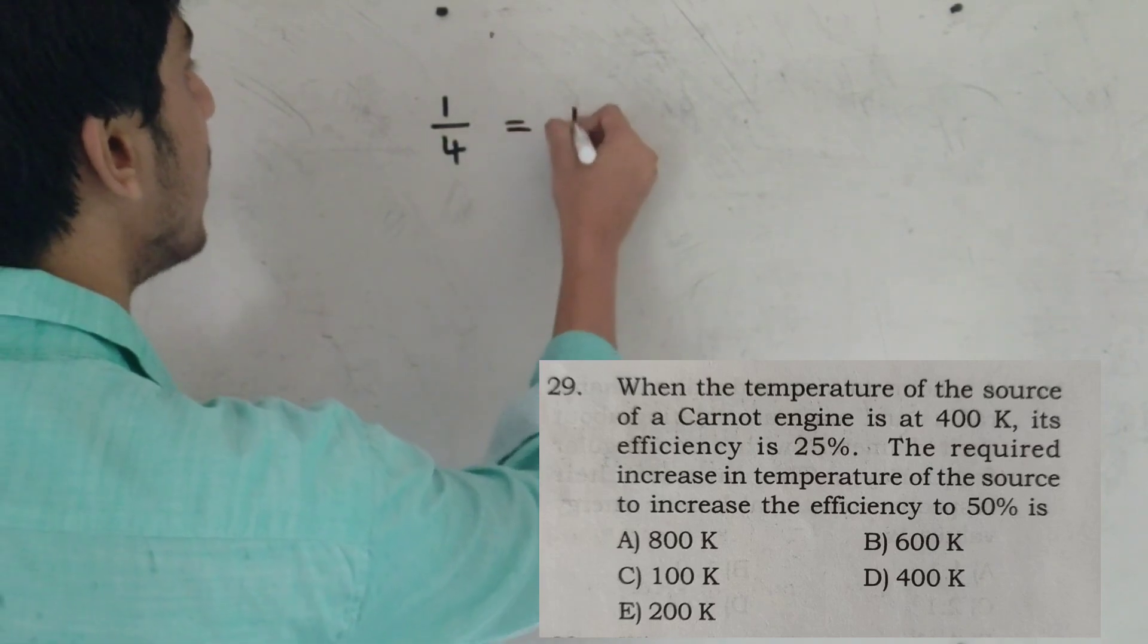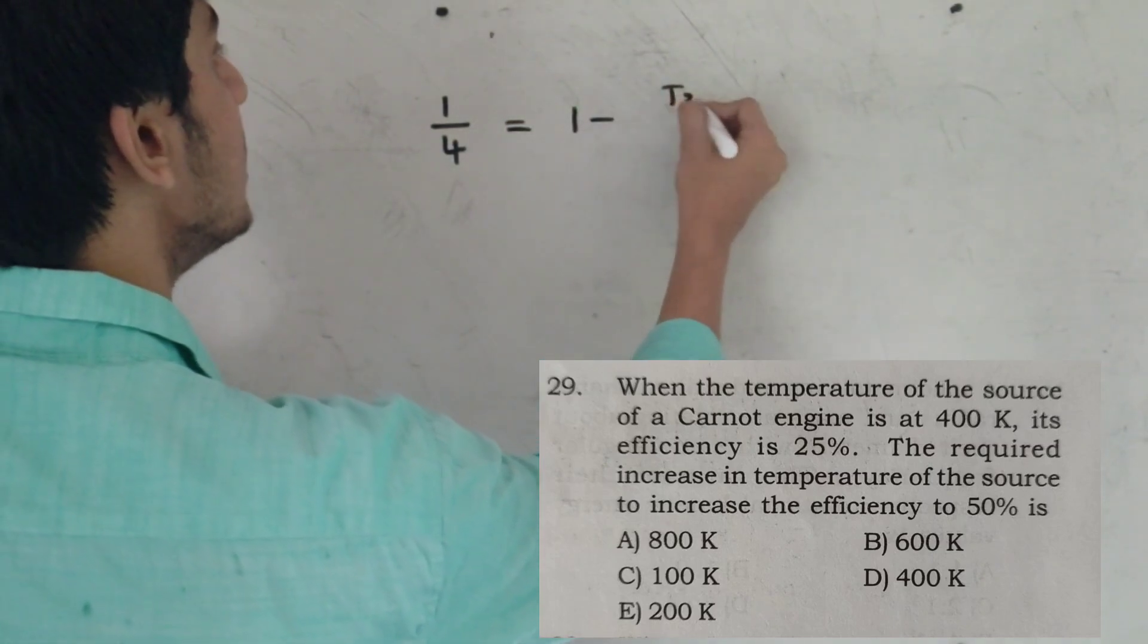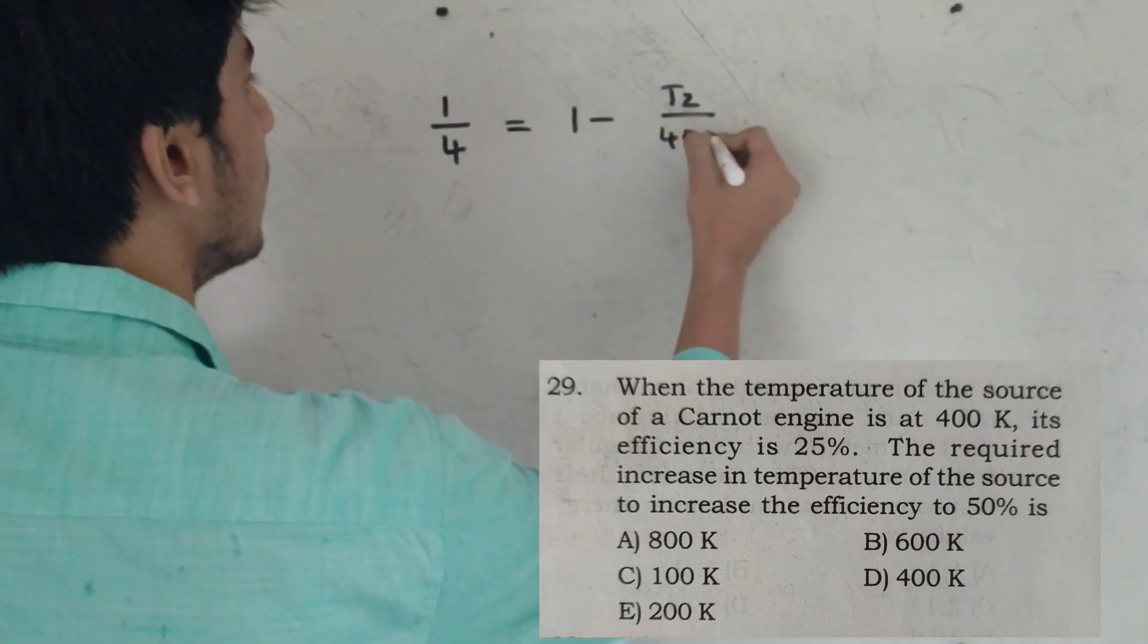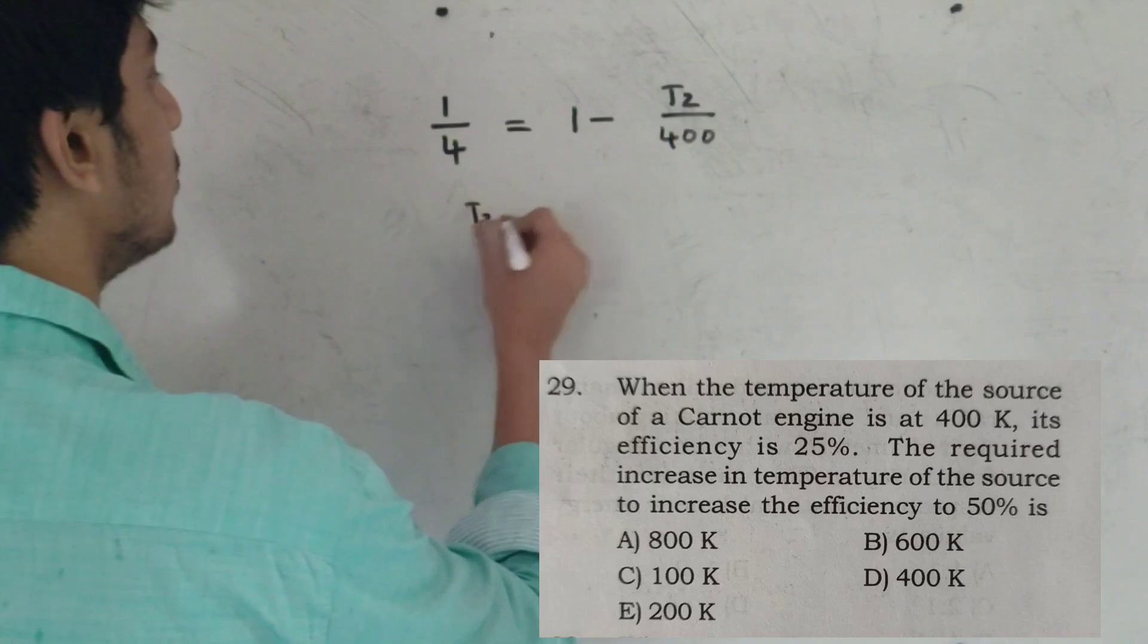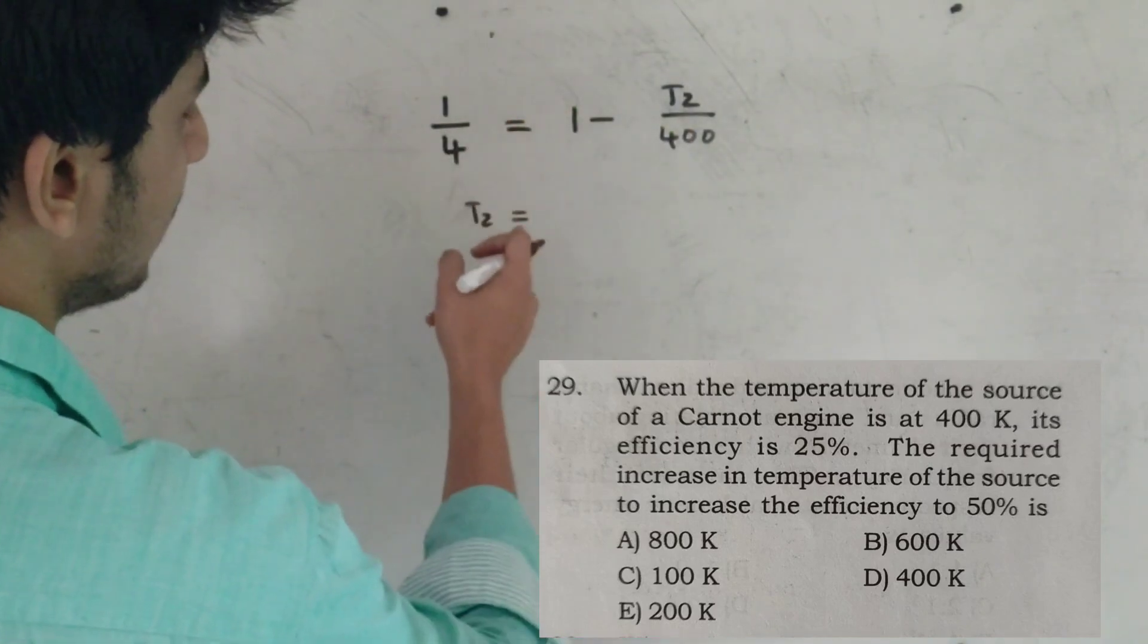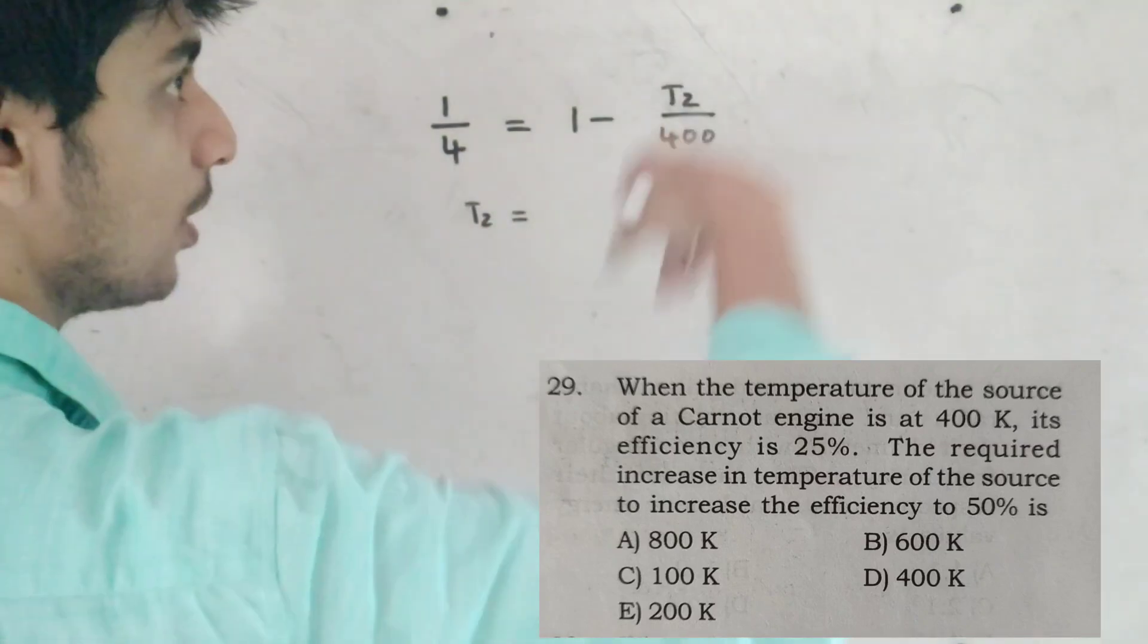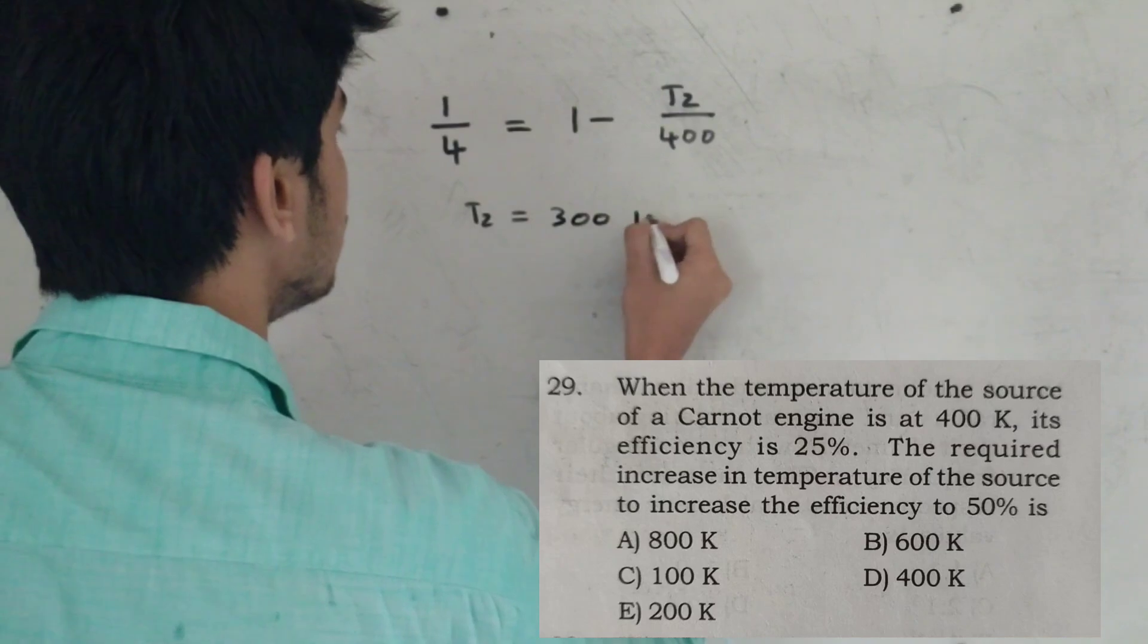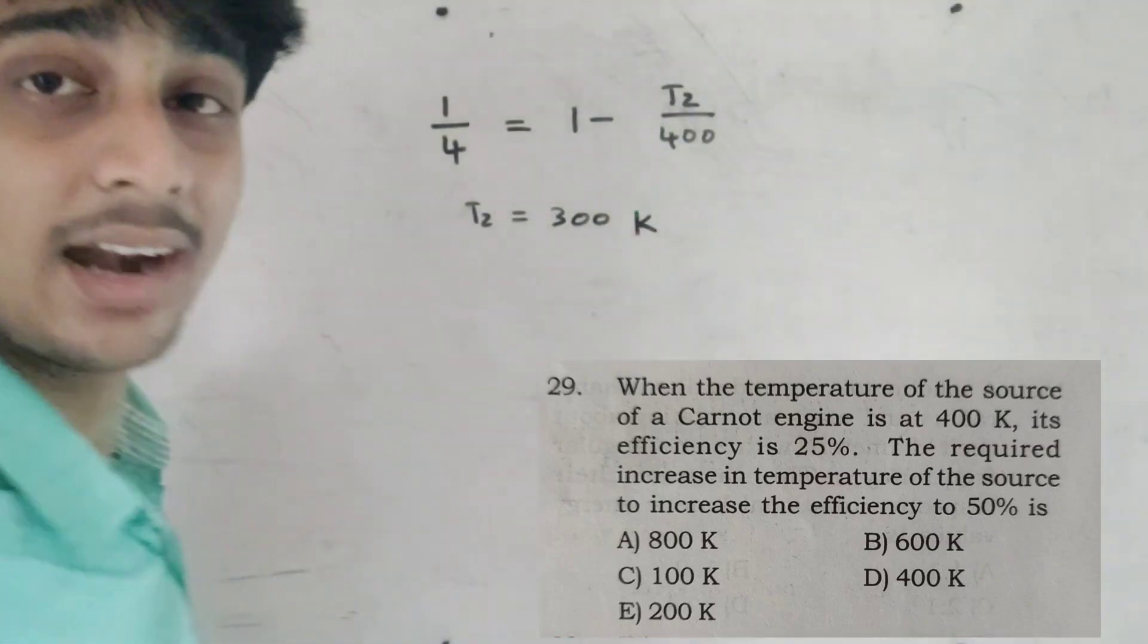Efficiency equals 1 minus T2 by T1. T1 equals 400 Kelvin. Source is 400 Kelvin. So we find T2.